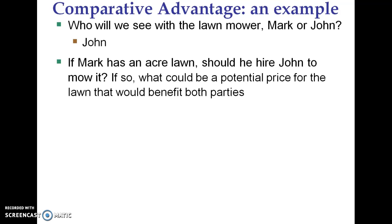Why? Because being the best at something doesn't mean it's worth your time. If John's mowing the lawn, he's only giving up being at the pizzeria. If Mark's mowing the lawn, he's giving up that higher-value job as a bookkeeper. So we're going to see John mowing the lawn. The price for this trade could be anywhere between $20 and $30. If the lawn costs less than $20, John would not agree to do it, because he could work at the pizzeria and make $20 over the two hours it would take to mow that average-sized lawn. The price has to be greater than or equal to $20 to make it worthwhile for John.